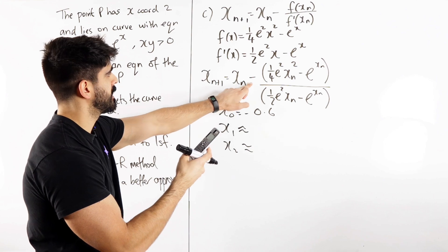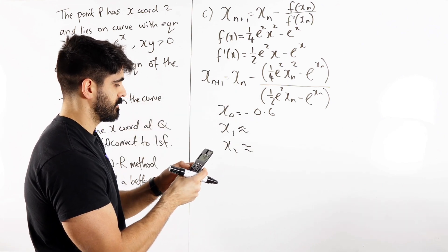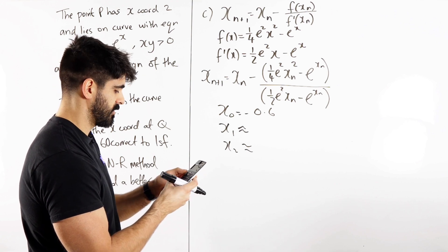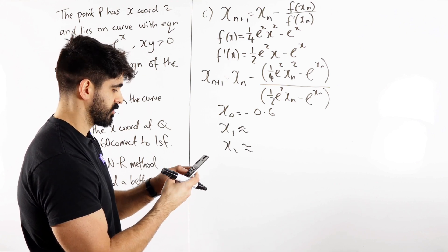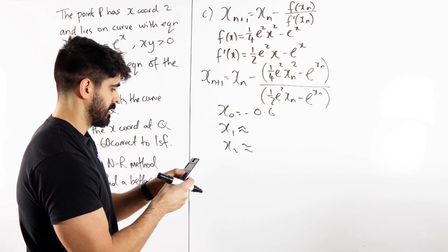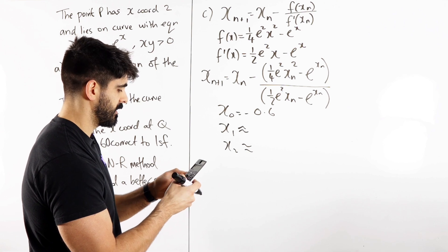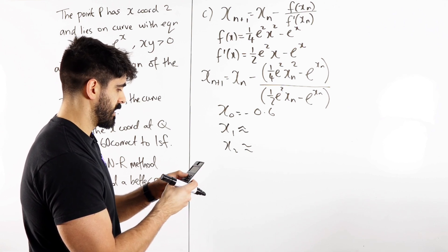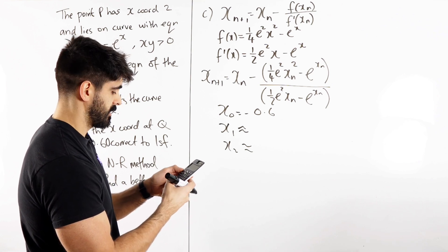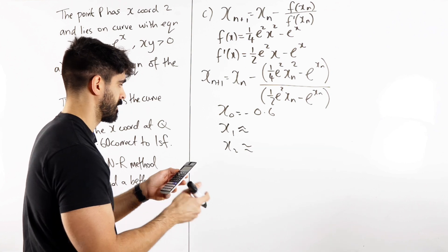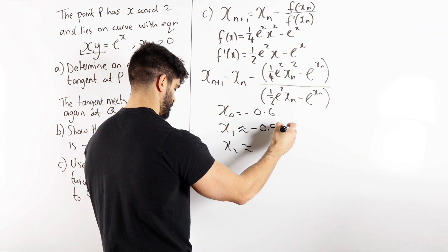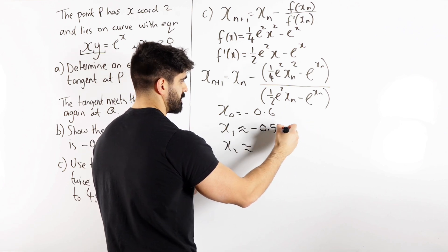Now here I'm going to do answer minus fraction bracket, I'm just going to write 0.25 e squared answer squared minus e to the power of answer. And then on the denominator I have 0.5 e squared answer minus e to the power of answer. Then we close that bracket. So I get minus 0.5579 eight. That's going to make it up to 5580.